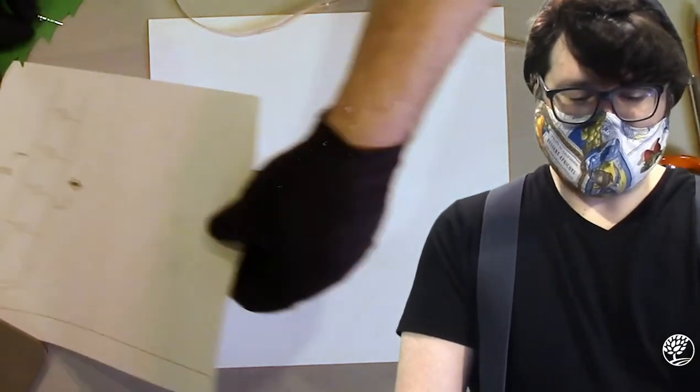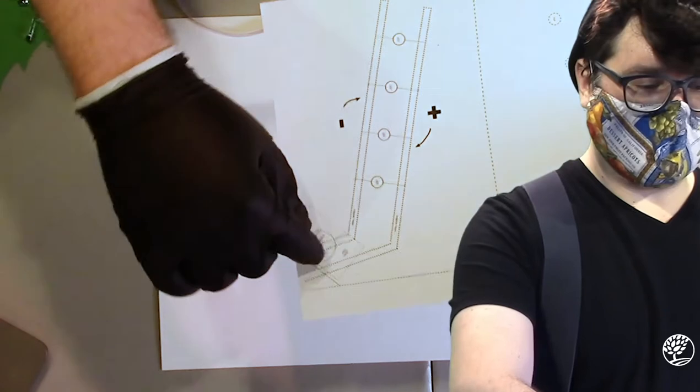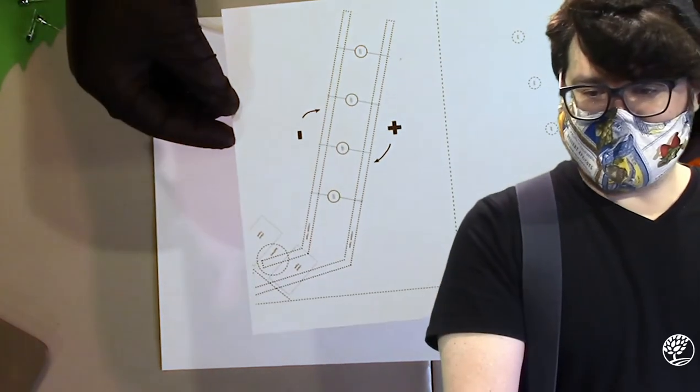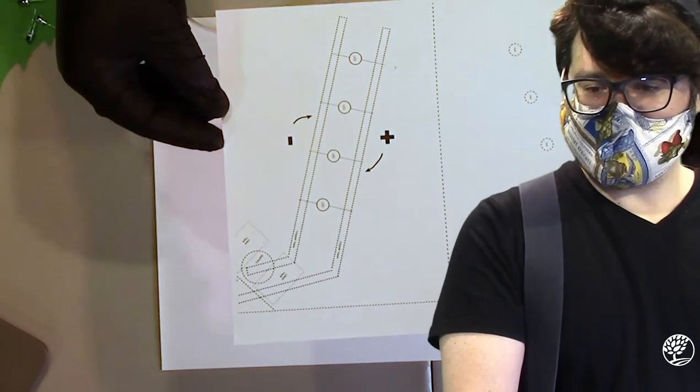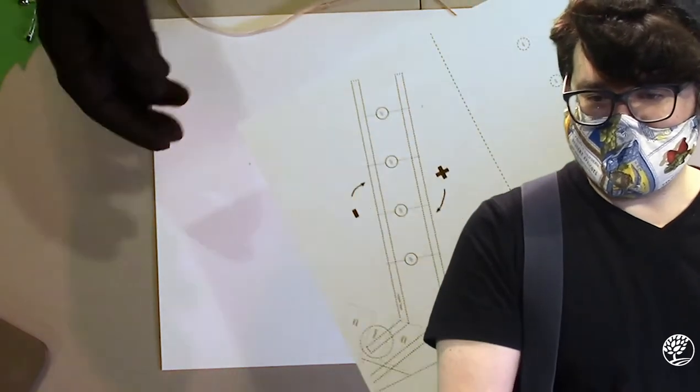We're going to take our tape and stick it to the cardstock following the pattern laid out here. This pattern is just like the ones used in conventional circuits, just a lot bigger, and we call these copper patterns traces.